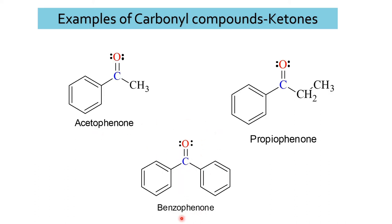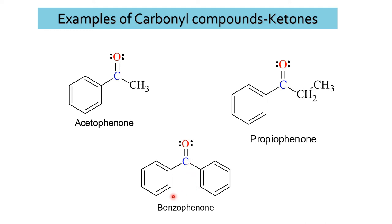These three are examples of aromatic ketones. This is called acetophenone, in which the carbonyl group is attached to a methyl group (alkyl group) on one side and a phenyl group (aryl group) on the other side. In this next example, the carbonyl group is surrounded by an ethyl group and a phenyl group. And in this example — benzophenone — the carbonyl group is attached to two phenyl groups.